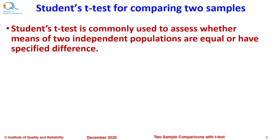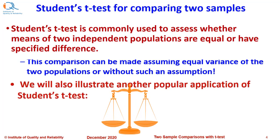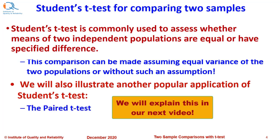Students T-Test is commonly used to assess whether means of two independent populations are equal or have specified difference. This comparison can be made assuming equal variance of the two populations or without making such an assumption. We will also illustrate another popular application of students t-test, the paired t-test, but we will see this in our next video.